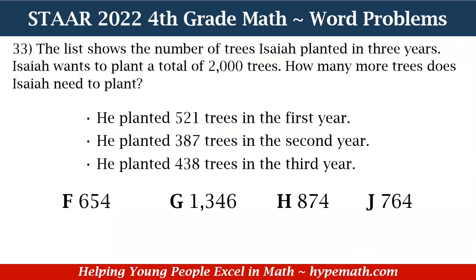Let's dive into number 33. The list shows the number of trees Isaiah planted in three years. Isaiah wants to plant a total of 2,000 trees. How many more trees does Isaiah need to plant? He planted 521 trees in the first year, 387 trees in the second year, and 438 trees in the third year. Our answer choices are F: 654, G: 1,346, H: 874, and J: 764.